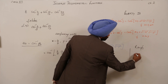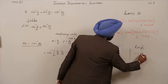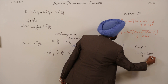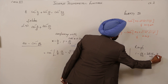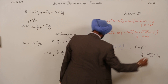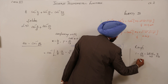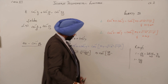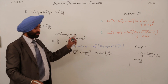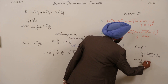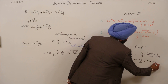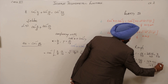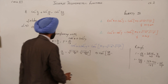For the first term: 1 − (4/5)² = 1 − 16/25 = 9/25. For the second term: 1 − (12/13)² = 1 − 144/169 = 25/169. So √(9/25) = 3/5 and √(25/169) = 5/13. The product of the two square root terms is therefore (3/5)·(5/13) = 15/65 = 3/13.